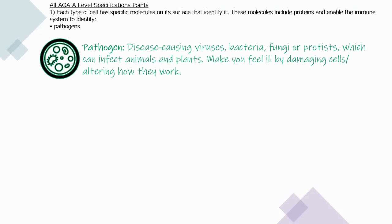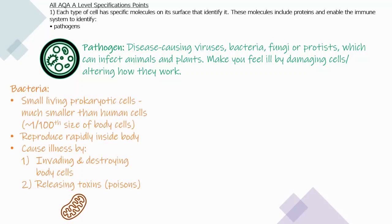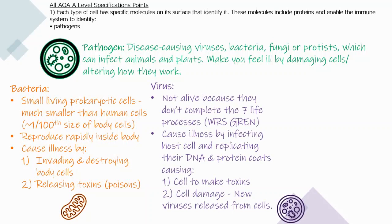A pathogen is a disease-causing virus, bacteria, fungi, or protist which can infect animals and plants. Pathogens make you feel ill by damaging cells or altering how they work. Bacteria are small prokaryotic cells, much smaller than human cells — only about one-hundredth the size of body cells. They reproduce rapidly and cause illness by invading and destroying body cells and also by releasing toxins. Viruses are not classed as alive, but cause illness by infecting the host cell and replicating their DNA and protein coats, which causes cells to make toxins and causes cell damage upon virus release.